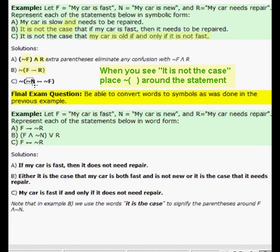If and only if is that double pointed arrow. And negation of F is that squiggly and the F which represents not fast. But then we have that it is not the case in front of it. So we put that little negation sign and then parentheses on both sides of that inside part.